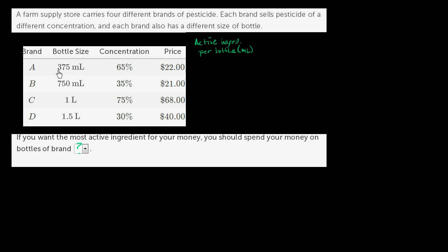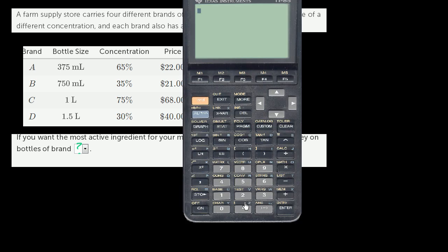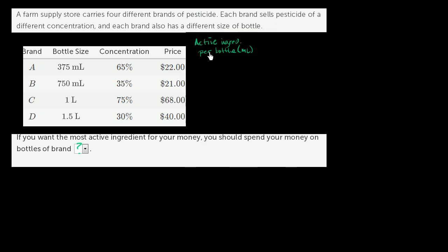So we have 375 milliliters, 65% of which is going to be active. So 65% of 375 is 0.65 times 375, which gets us 243.75, or 273.75 milliliters of active ingredient per bottle.